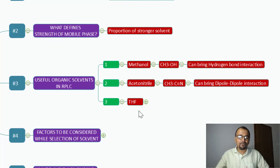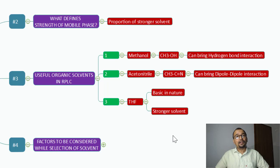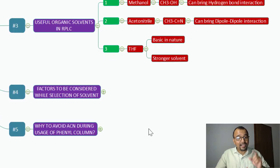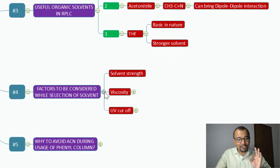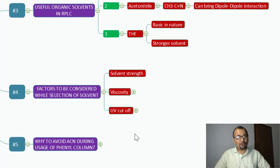THF is basic in nature and is the strongest solvent among these three. If you want to elute a compound early and do not want a high retention time or long runtime method, tetrahydrofuran can help you. To summarize the factors to consider when selecting an organic solvent: based on solvent strength and the necessity for higher or lower retention time, you can determine which solvent and what proportion of organic solvent to use in the mobile phase.